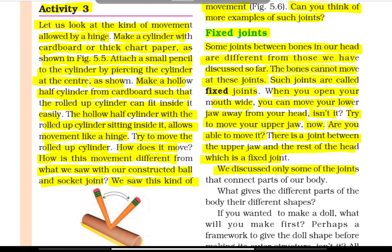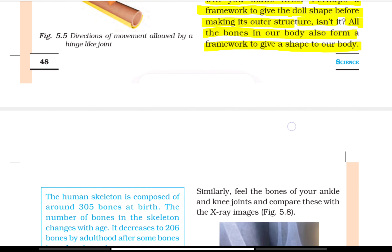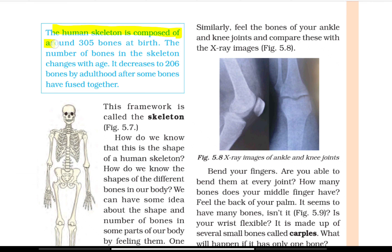What gives the different parts of the body their different shapes? If you wanted to make a doll, what would you make first? Perhaps a framework to give the doll shape before making its outer structure. All the bones in our body also form a framework to give shape to our body. The human skeleton is composed of around 305 bones at birth. The number decreases to 206 bones by adulthood after some bones have fused together. This framework is called a skeleton.